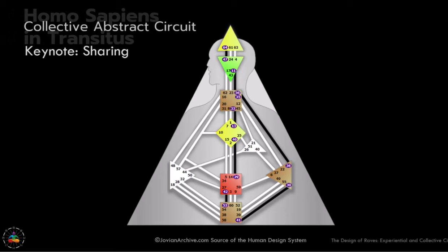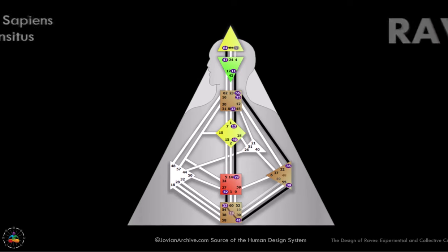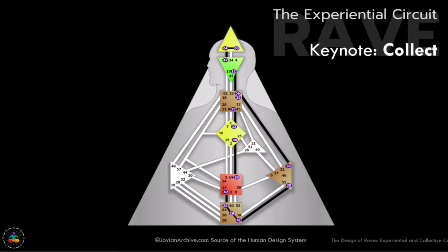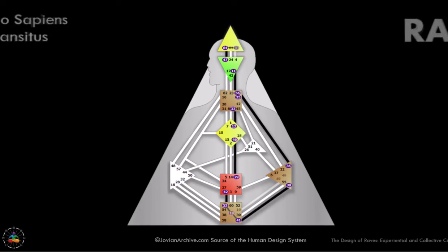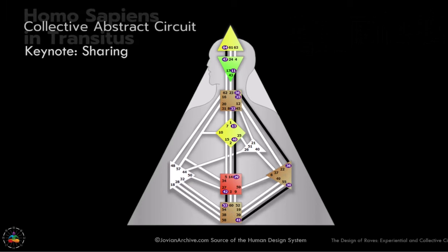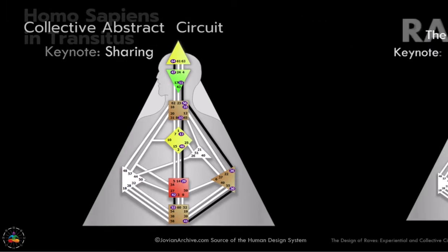If we look at our current body graph that we're familiar with — Homo sapiens in transitus — the collective abstract circuitry has this keynote of sharing. Whereas in the rave, the keynote will be collect. So no longer about sharing, but collecting — you could say, blind collecting rather than sharing.